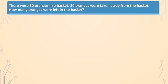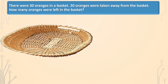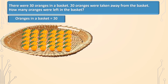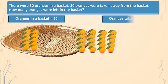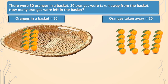There were 30 oranges in a basket. 20 oranges were taken away from the basket. How many oranges were left in the basket? Oranges in a basket is equal to 30. Oranges taken away is equal to 20. When 20 oranges are taken away, the number of oranges left in the basket will become less. And when the number becomes less, there is subtraction.